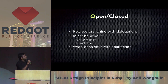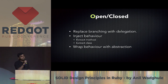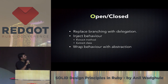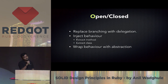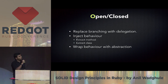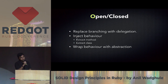If there is branching, replace it with delegation. Inject changing behavior — don't have changing behavior inside your class. Wrap behavior with abstraction. If dependencies have different APIs, wrap those dependencies into one abstraction and pass that dependency to its consumer. That's how we achieve Open-Close principle.